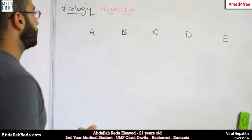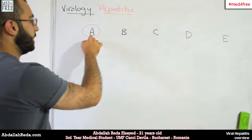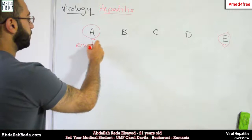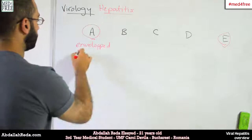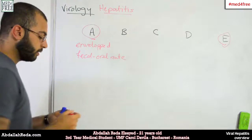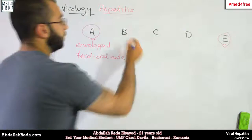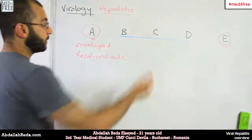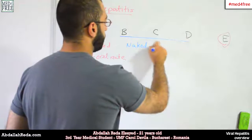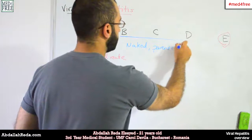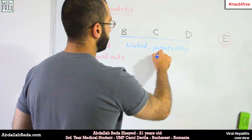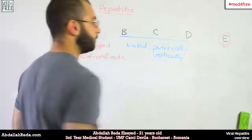Let's start with hepatitis A and hepatitis E. Both of them are transmitted through the fecal-oral route. B, C, and D, on the other hand, are naked viruses and they are transmitted parenterally — through injections — and vertically through pregnancy.